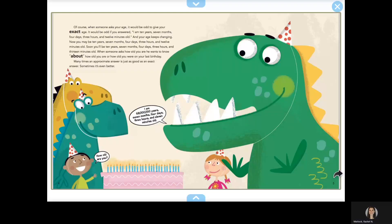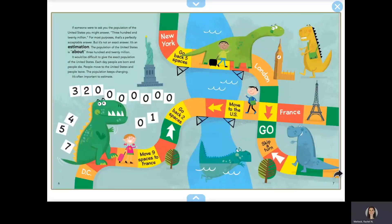Sometimes, it's even better. If someone were to ask you the population of the United States, you might answer 320 million. For most purposes, that's a perfectly acceptable answer. But it's not an exact answer. It's an estimation.